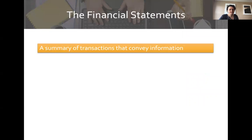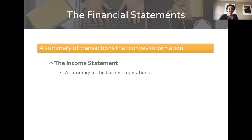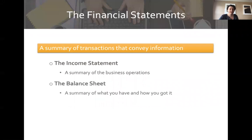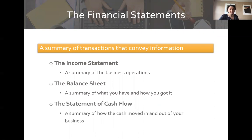Financial statements are a summary of all the transactions in our business to convey information. We have the income statement, which summarizes our business operations. We have the balance sheet, which is a summary of what we have and how we got it. And we have the statement of cash flows, which is a summary of how cash moved in and out of our business.